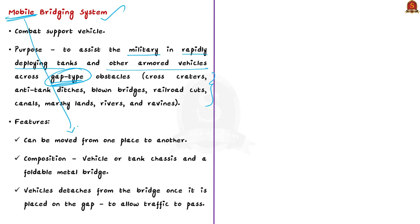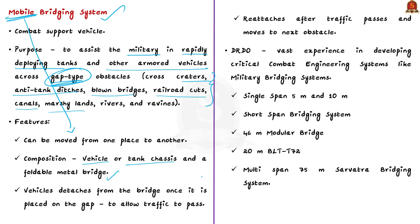The SSBS also allows armored or infantry units to cross craters, anti-tank ditches, blown bridges, railroad cuts, canals, marshy lands, rivers, and ravines. A typical mobile bridging system consists of a vehicle or tank chassis and a foldable metal bridge. During bridging, the foldable metal bridge unfolds, providing a ready-made bridge across the obstacle in a few minutes. Once the metal bridge is placed, the vehicle detaches, allows traffic to pass, and then reattaches to retract the bridge and move to the next obstacle.